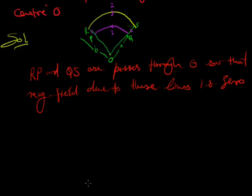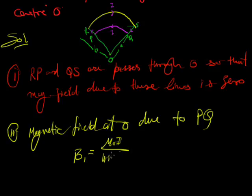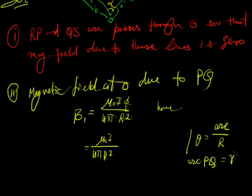So the magnetic field due to these lines is zero. The magnetic field at O due to the circular segment PQ is given by B1 equals mu_0 I upon 4 pi R square, where the angle is alpha. So mu_0 I over 4 pi R square. Because angle theta equals arc upon radius, so arc PQ equals R alpha.